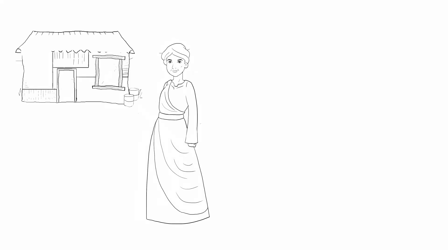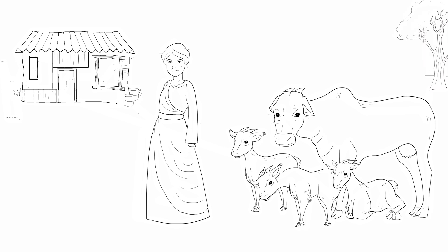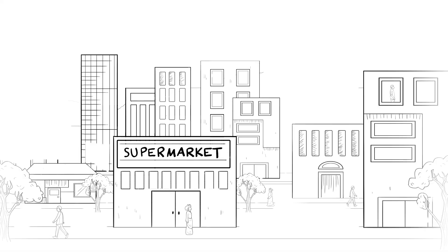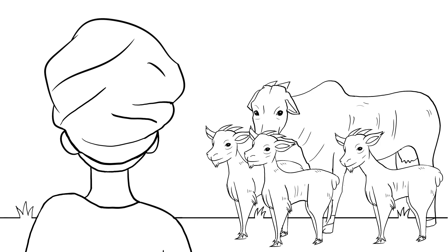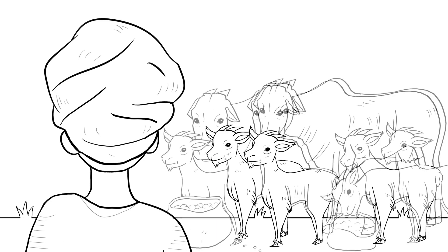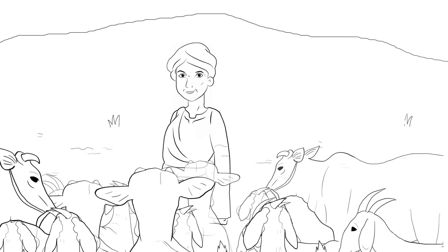Take Petra, a smallholder farmer living in poverty in a hilly rural area. Her family relies on cash from raising animals and selling milk. To take advantage of growing markets for meat and dairy products in cities, Petra needed to increase production. But this carried several risks, one being livestock disease, which makes animals unproductive.